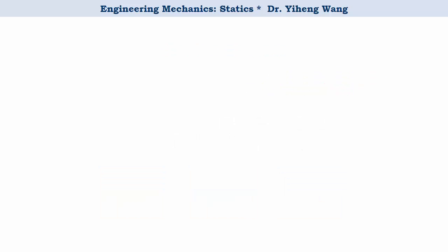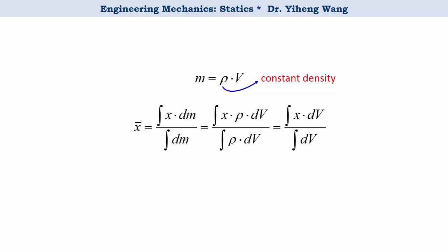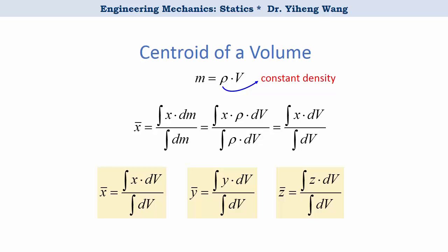We also know that mass equals density rho times the volume. And if the rigid body has uniform density, then density rho can also be cancelled out from the numerator and denominator of the equation. And now this new set of formulas represent the coordinates of the centroid of the volume for this rigid body. Note that centroid means a geometric center. And in this case, the center of gravity, the center of mass, and the centroid of the volume are all the same point.